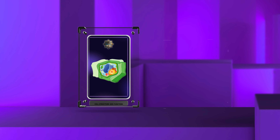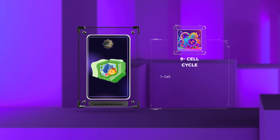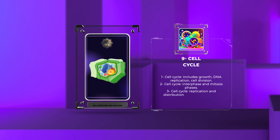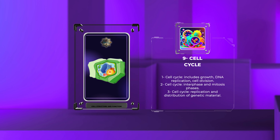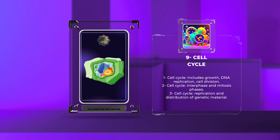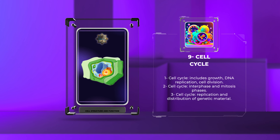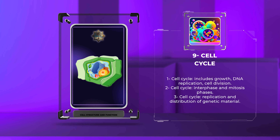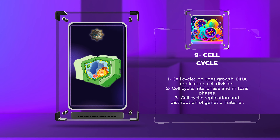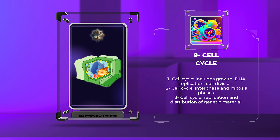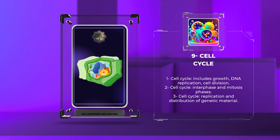The cell cycle represents the series of events that occur during a cell's life, including growth, DNA replication, and cell division. Consisting of distinct phases, such as interphase and mitosis, the cell cycle ensures the proper replication and distribution of genetic material to daughter cells.